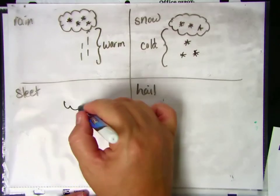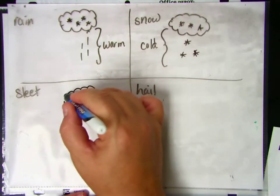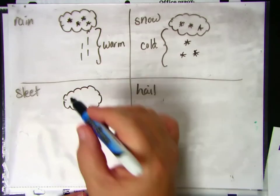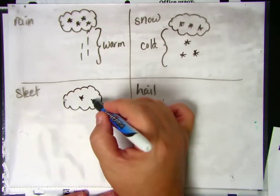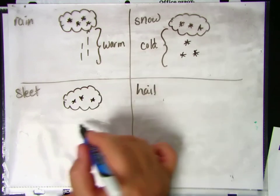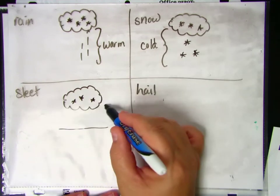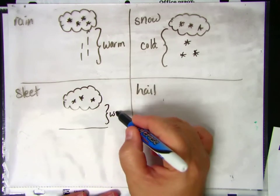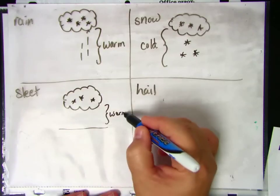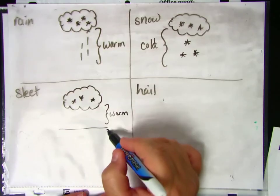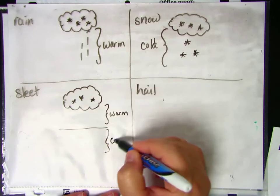Sleet is halfway between rain and snow, and the air below is pretty much the same, halfway between rain and snow. The top layer of air is warm air because warm air always rises, and the bottom layer of air is cold air.